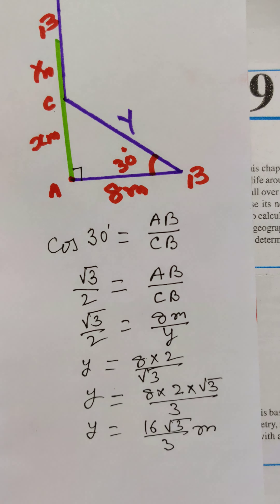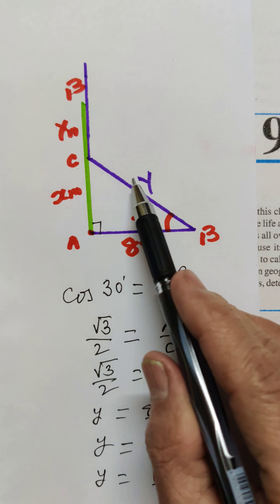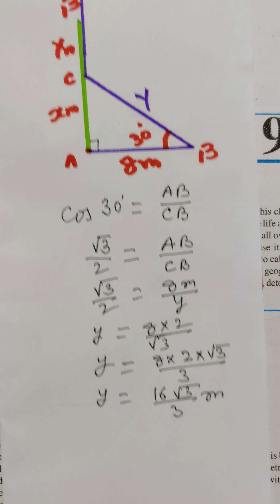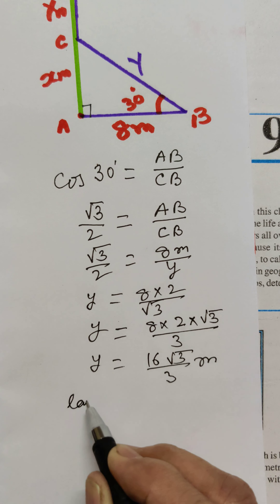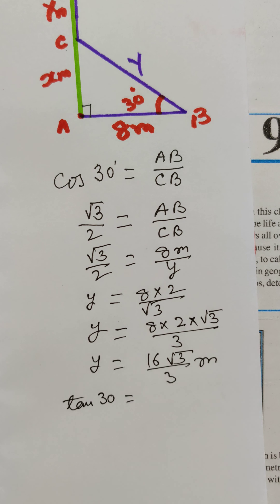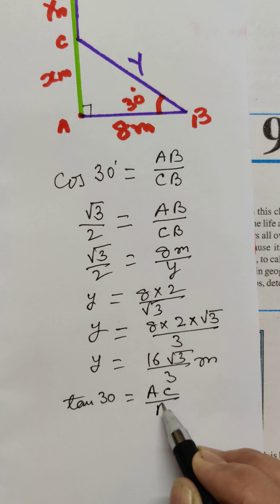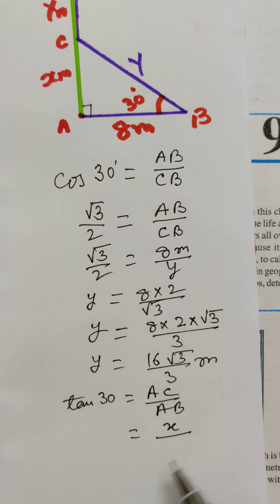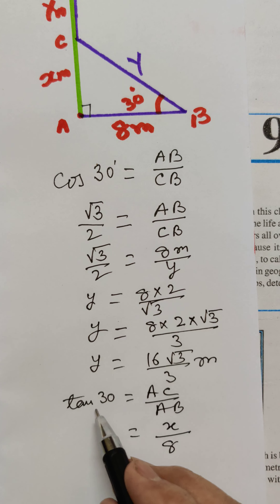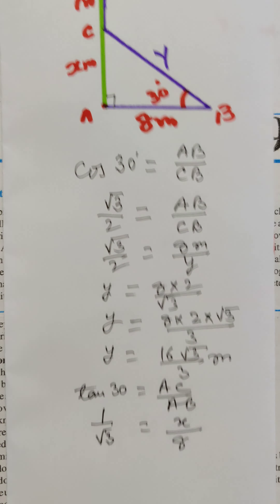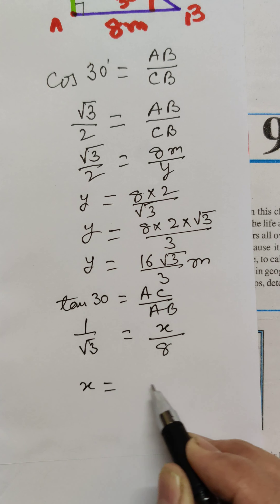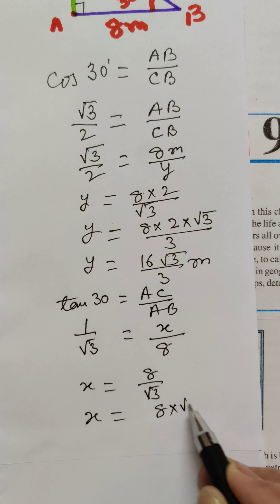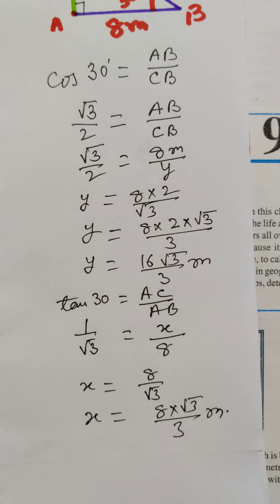Now we shall use tan 30° in this triangle. Tan 30° is better here. Tan 30° = AC/AB. The value of AC is x and AB is 8 meters, and tan 30° = 1/√3, so x = 8/√3. Rationalizing, x = 8√3/3 meters.